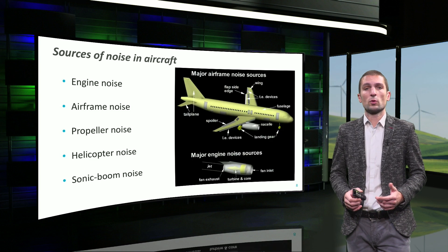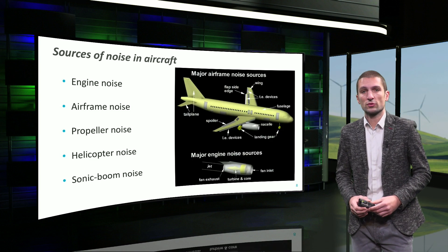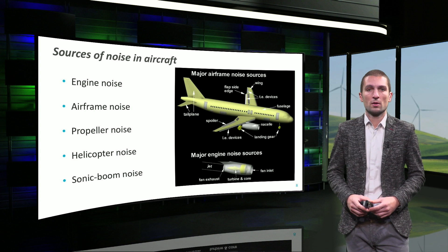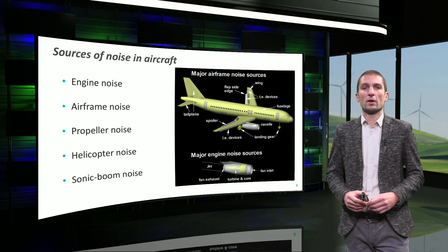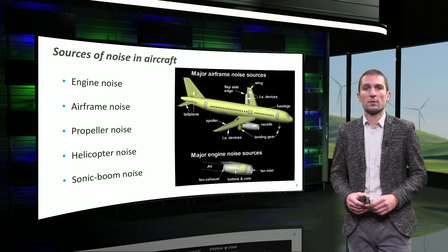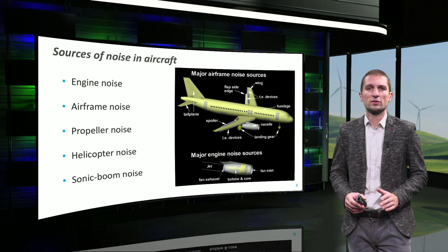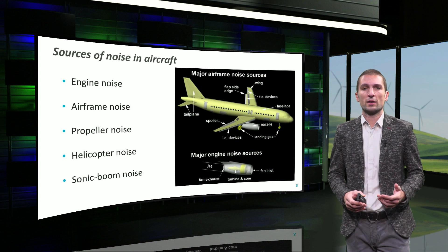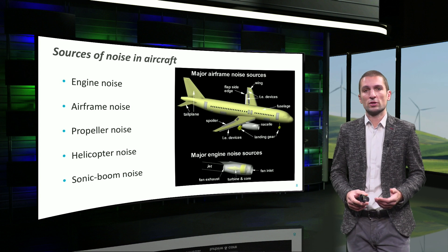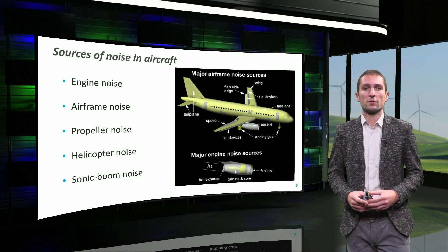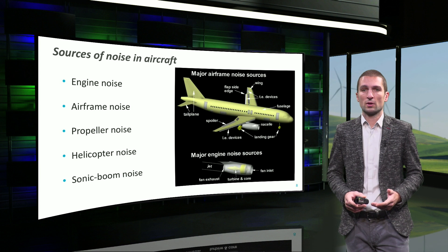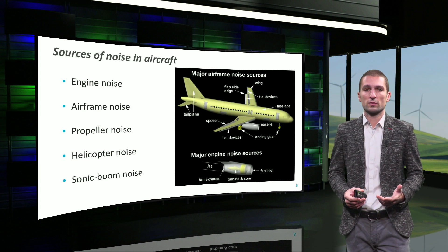This requires knowing where the aircraft sources of noise are coming from. By recalling what we have learned, in a flying machine, five important noise sources can be found. From the component side, we can find jet noise, airframe noise, propeller noise, helicopter noise, and sonic boom noise.